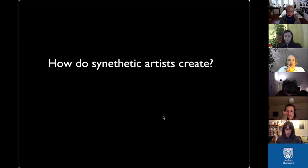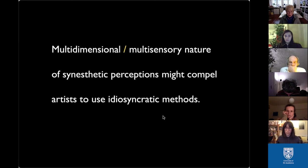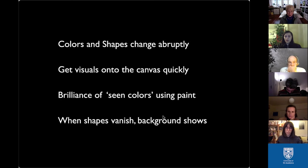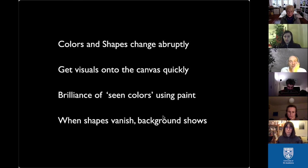How do synesthetic artists create? It's the multi-dimensional, multi-sensory nature of synesthesia that makes us use idiosyncratic methods — things that would not be taught in a traditional art school. The colors and shapes we see change abruptly and we have no choice: we have to get what we're seeing onto the canvas quickly. Any time you mix color you dull it, so maybe you should blend more optically than physically. And I was always taught not to leave any canvas exposed — cover everything — but when my shapes vanished, the background I was watching them on shows. So it's truthful to what I'm seeing to leave blank spaces.